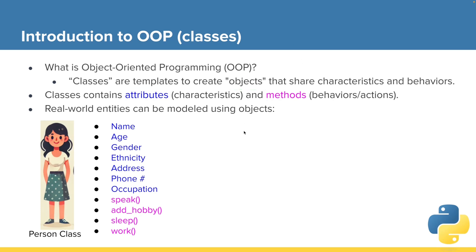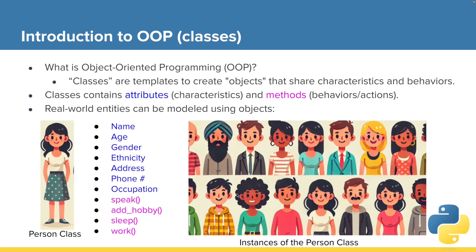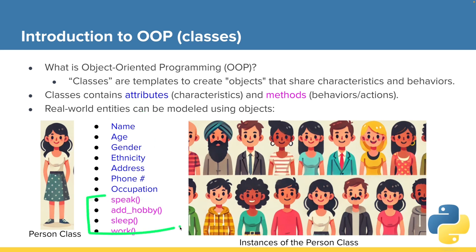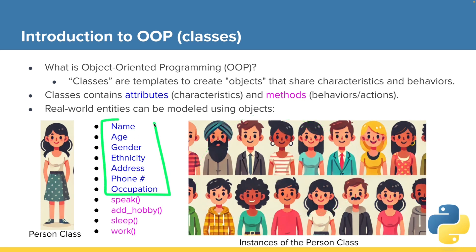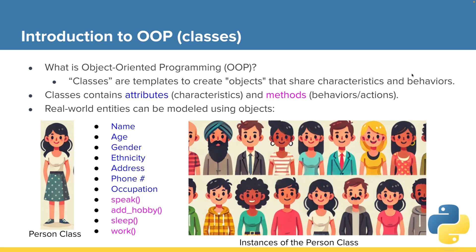Now we have a bunch of different instances or objects of the person class. Every one of these people is different — we want to track them individually — but the things we account for in this example would be those shared attributes and methods defined, these capabilities. So that's an introduction to classes. We can think of this people example, and we're going to build upon this as we dive deeper into what makes a Python class.